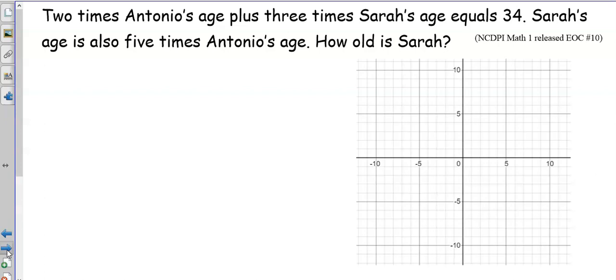Two times Antonio's age plus three times Sarah's age equals 34. Sarah's age is also five times Antonio's age. How old is Sarah? Let's start by writing a couple of equations. Whenever I have a word problem, I like to define my variables. So A is going to represent Antonio's age, and S is going to represent Sarah's age.